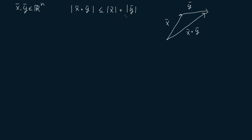Geometrically, what the triangle inequality states is that in a triangle none of the sides is longer than the sum of the two other side lengths. So in our case, if we had the triangle formed by the vectors x, y, and the sum x plus y, then the length of the side formed by the vector x plus y is always less than or equal to the length of side x plus the length of side y. We also see that equality holds when x and y are parallel.